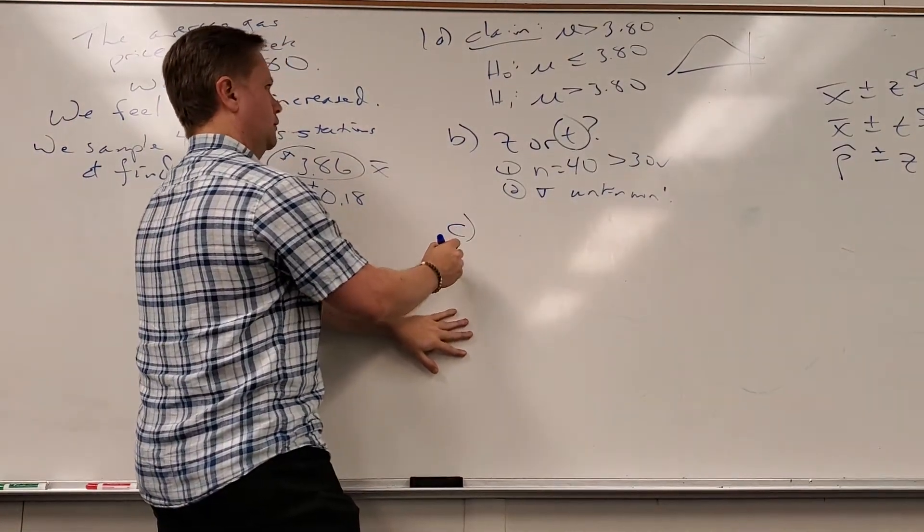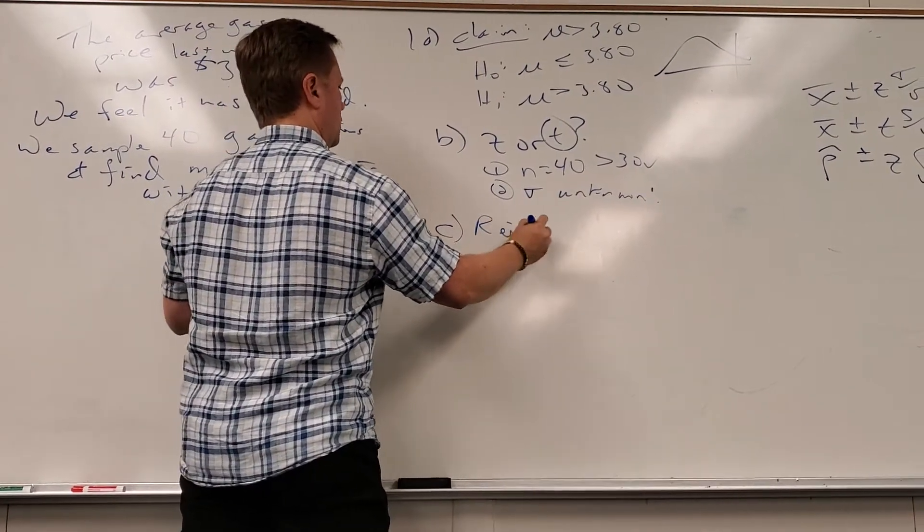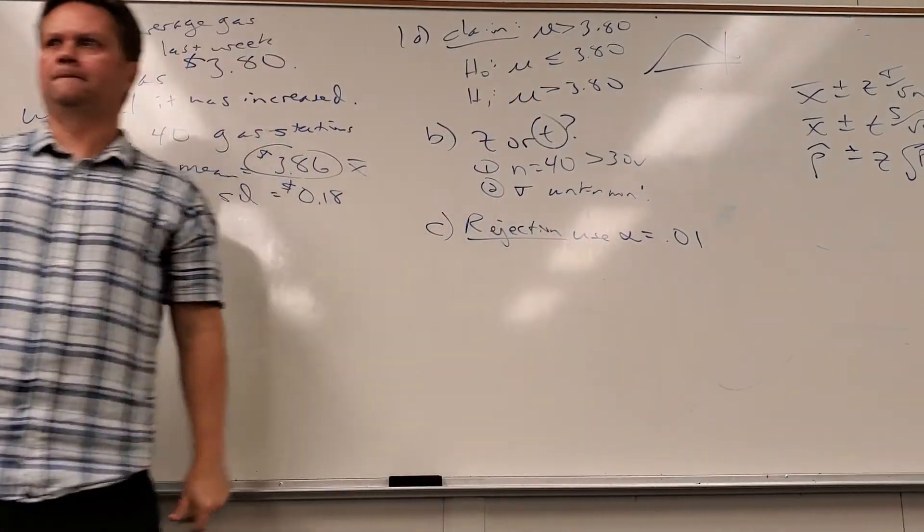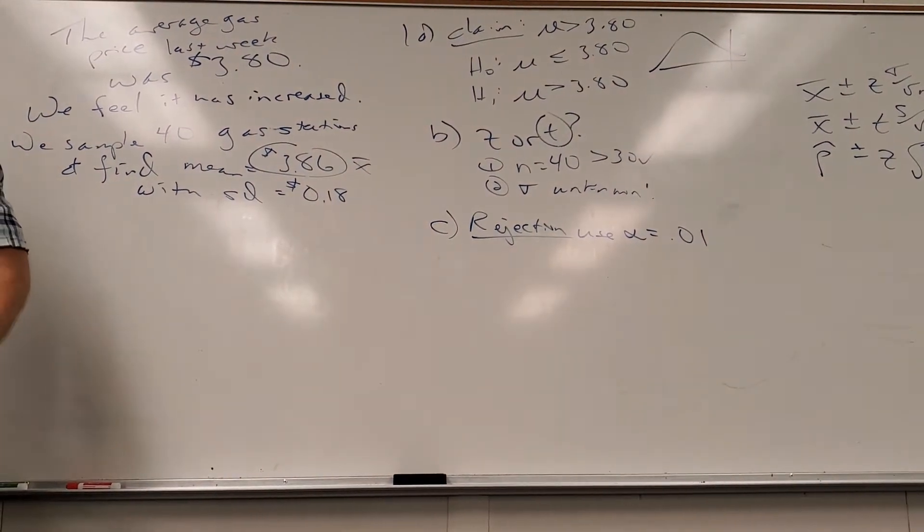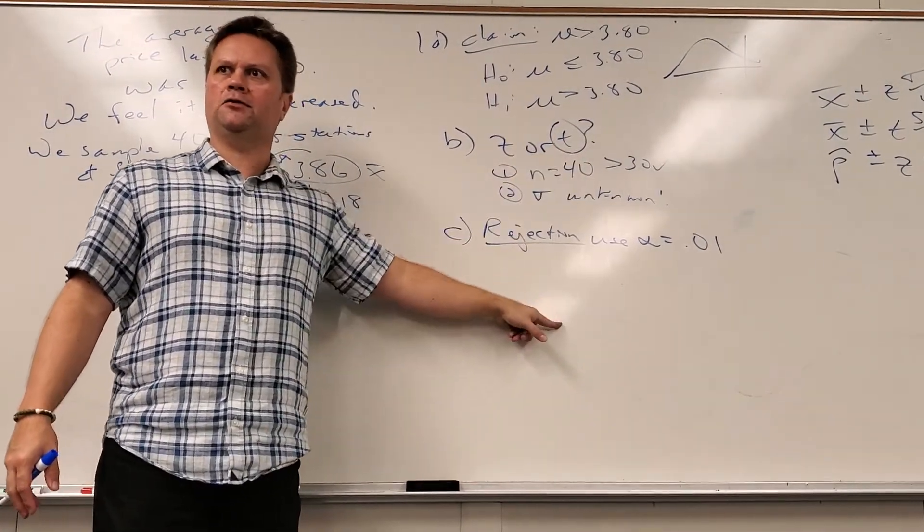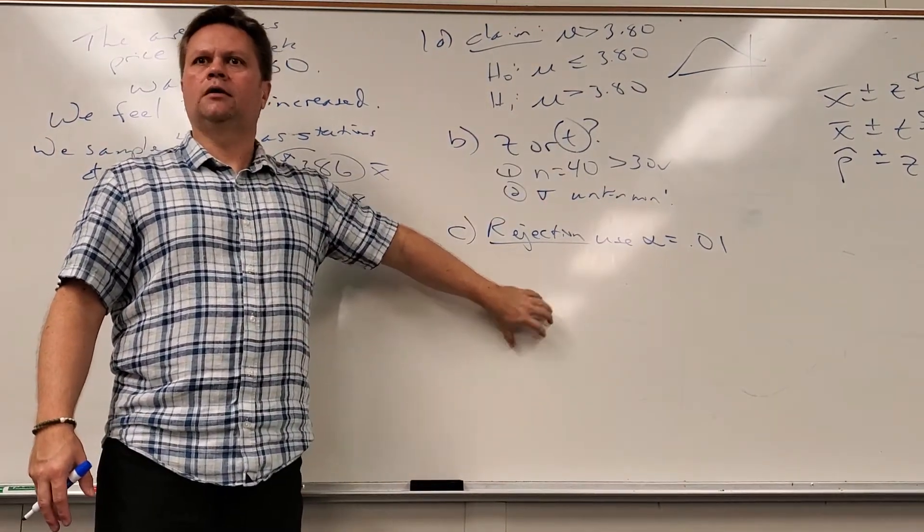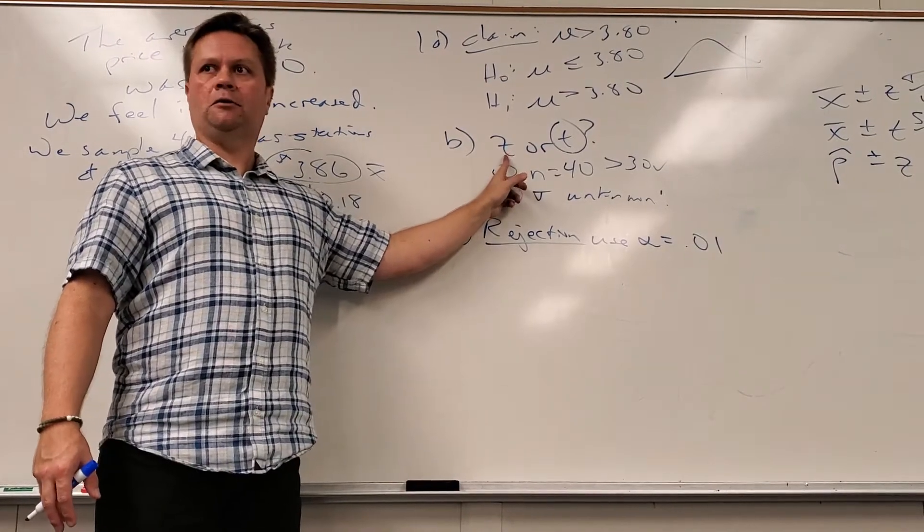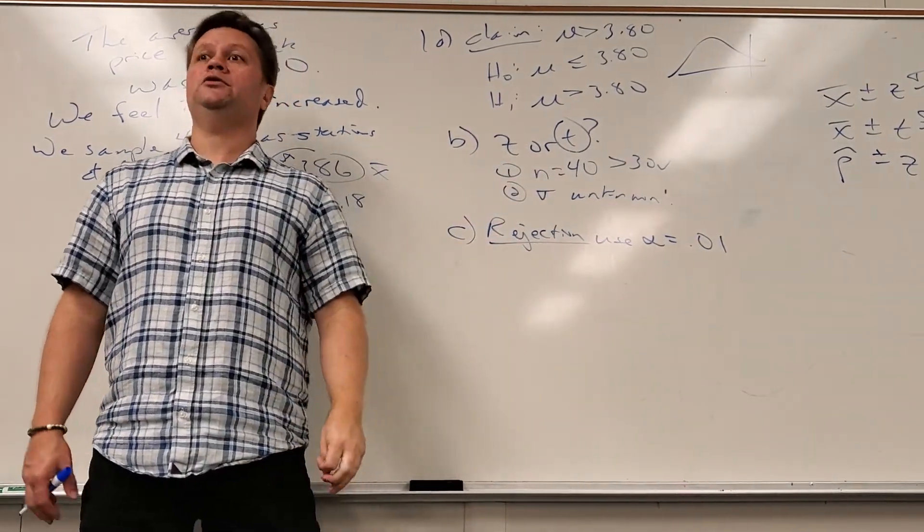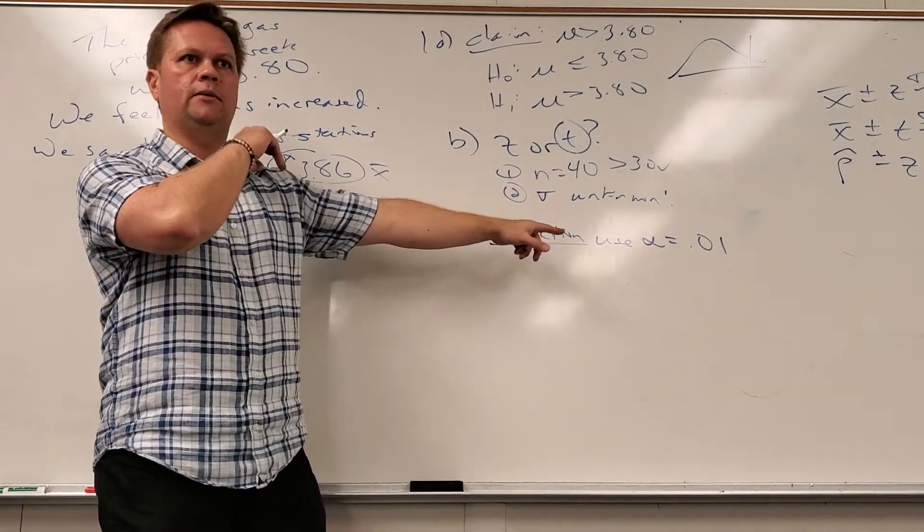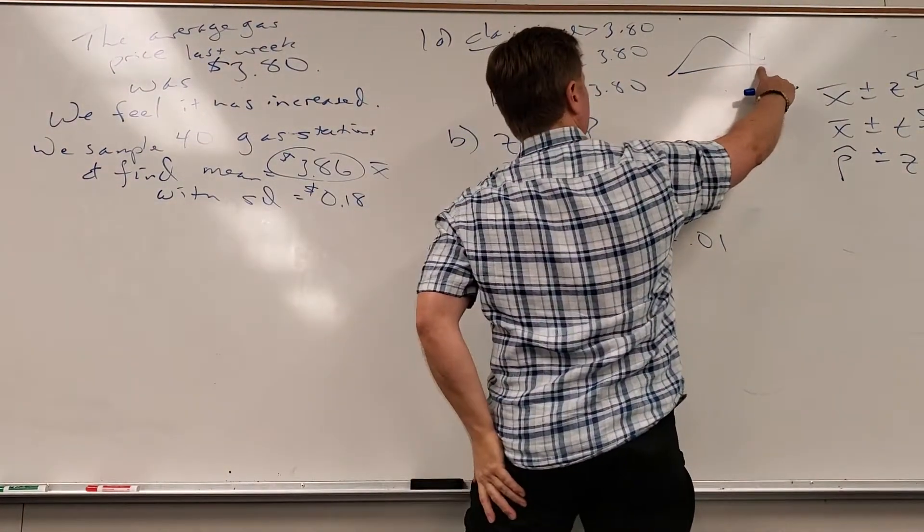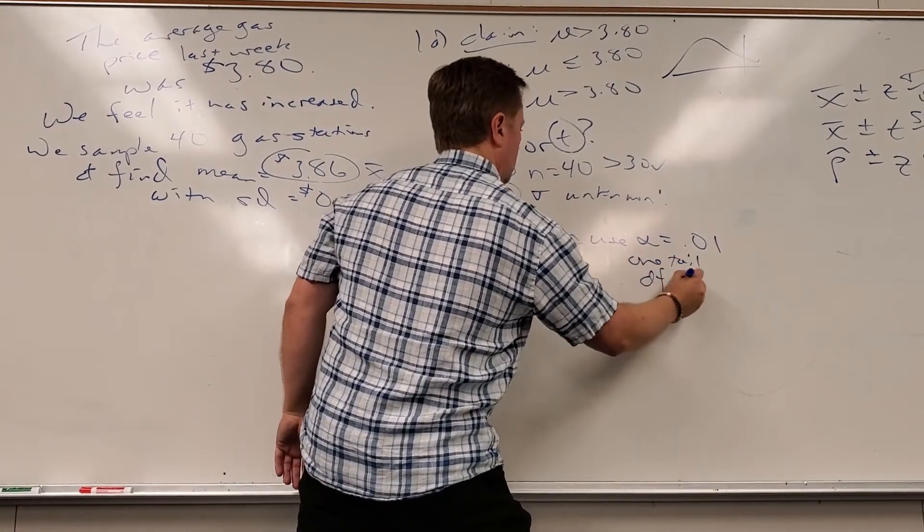So I know I can use t-scores. What's the next step? Rejection region. Here's where I've got to tell you - use alpha equal to 0.01. So what do I need to do to figure out the critical value? If here you say t-scores, then use a t-score. So what do I need to know to be able to look up that t-score? I know alpha, it's a one tail test. What's the degrees of freedom? 39.